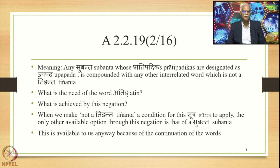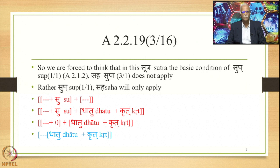The question is: what is the need of the word 'a-Tinganta' and what is achieved by this negation? When we make 'not a Tinganta' a condition for this Sutra to apply, the only other available option through this negation is that of a Subanta. This is available anyway because of the continuation of the words Sub, etc. So we are forced to think that in this Sutra the basic condition of Sub and Sahasupa does not apply — rather, Sub and Sahasupa will only apply.